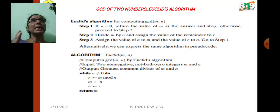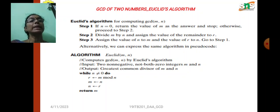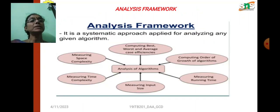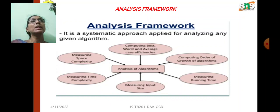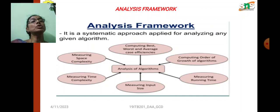So m is the final answer, which is returned. This is the procedure for calculating the GCD of two numbers. For every algorithm, we must analyze the space and time complexity. The analysis framework is a systematic approach applied to analyzing any algorithm.